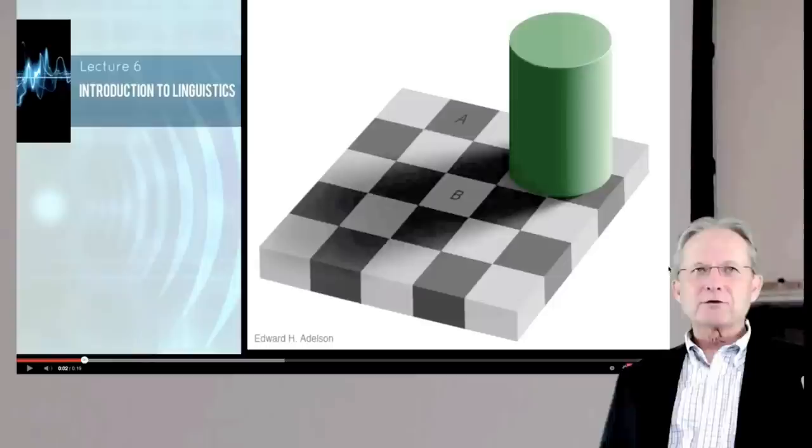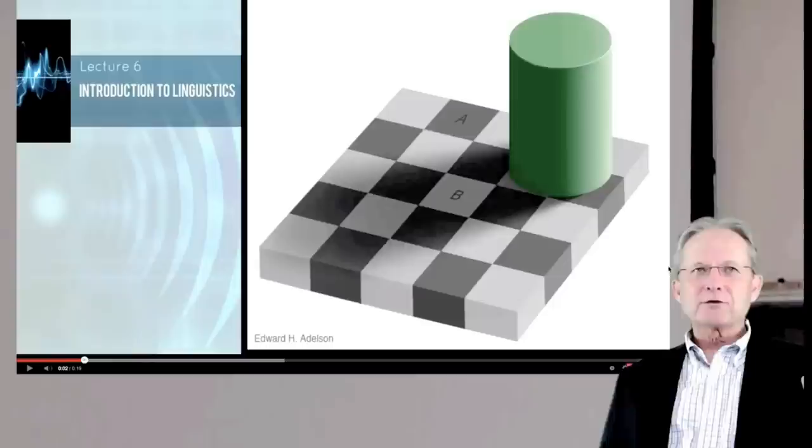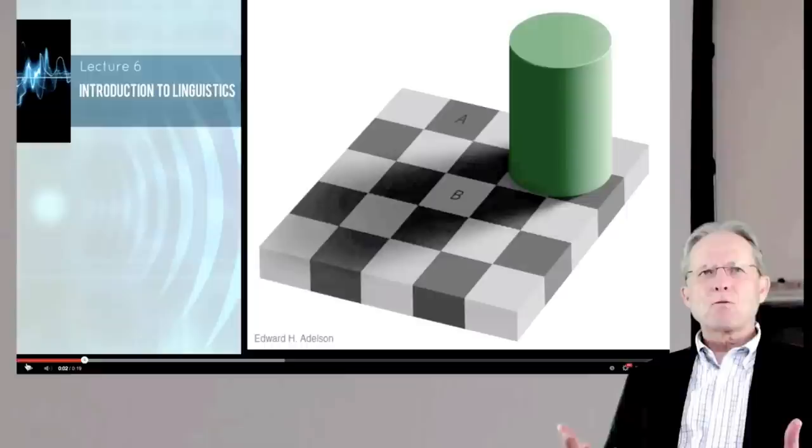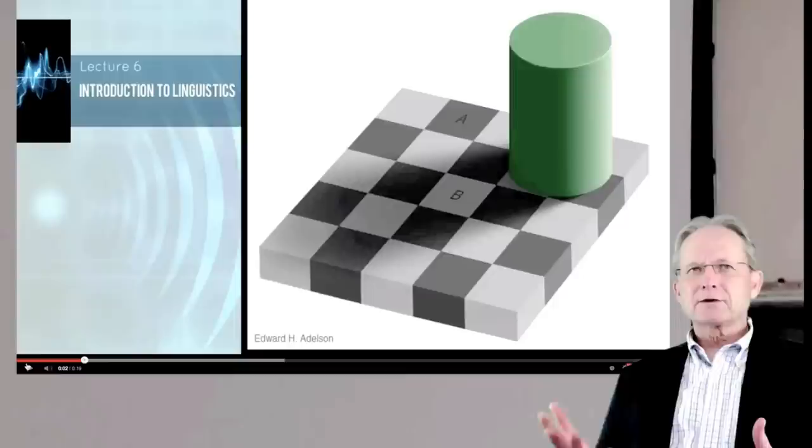So how is it that we do that? First of all, let's verify that they are the same color. So what I'm going to do is, what I did here was take the image, put it on a pure white background, and then lay across it pieces of white until such time as everything's gone but squares A and B.